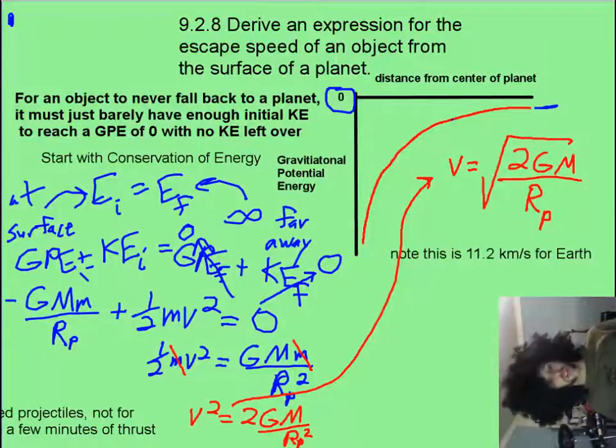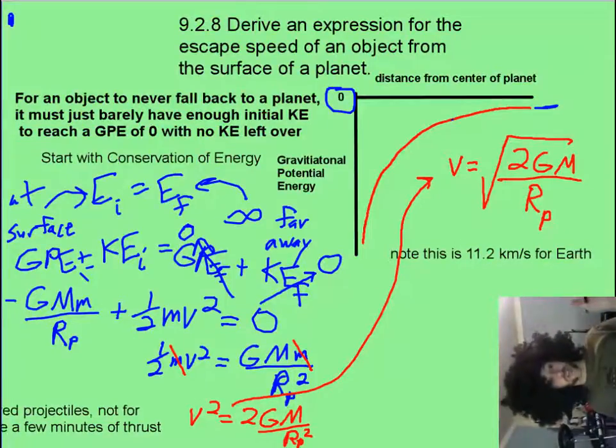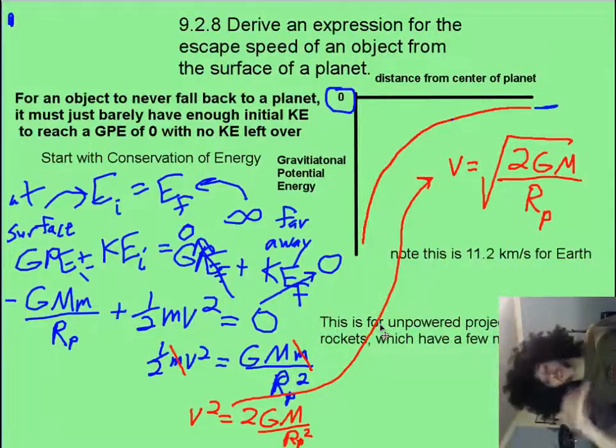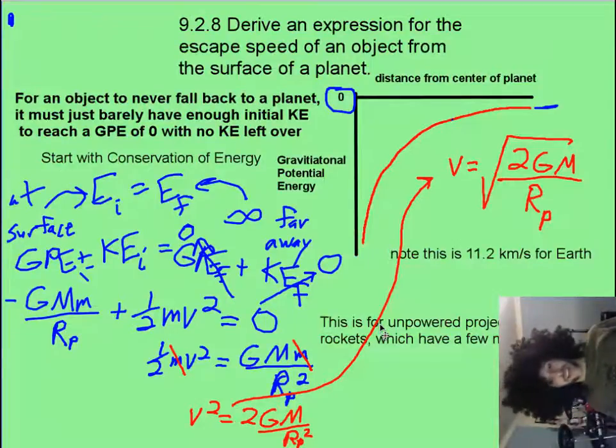it doesn't matter what mass of your object you have. It's the exact same escape speed. Now this is for ballistic things that you launch with an initial speed, and then they're projectiles. This is not for things like rockets, which will have a continual thrust to fight against the force of gravity. Those do not have as high of an escape speed, because of that thrust that they have.